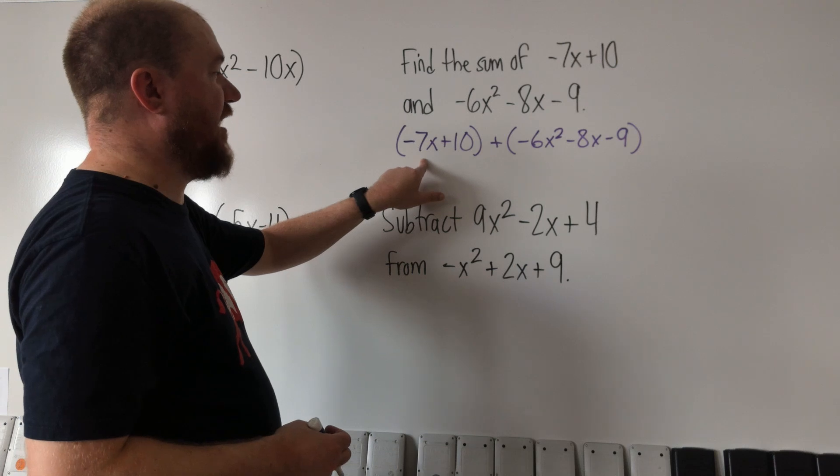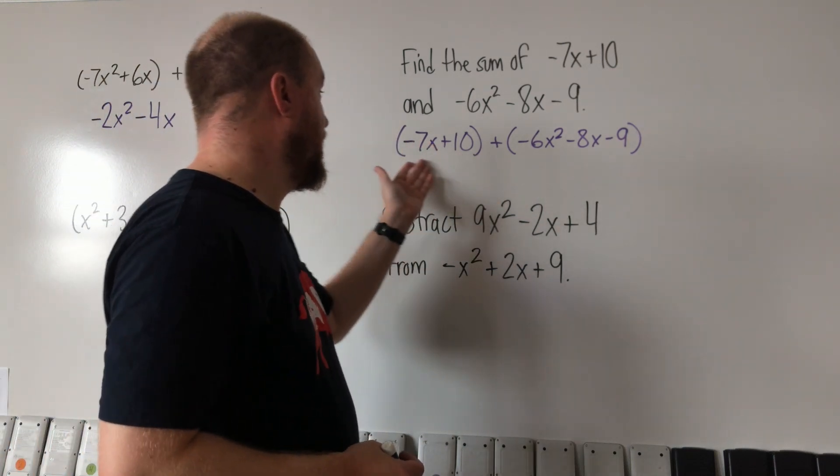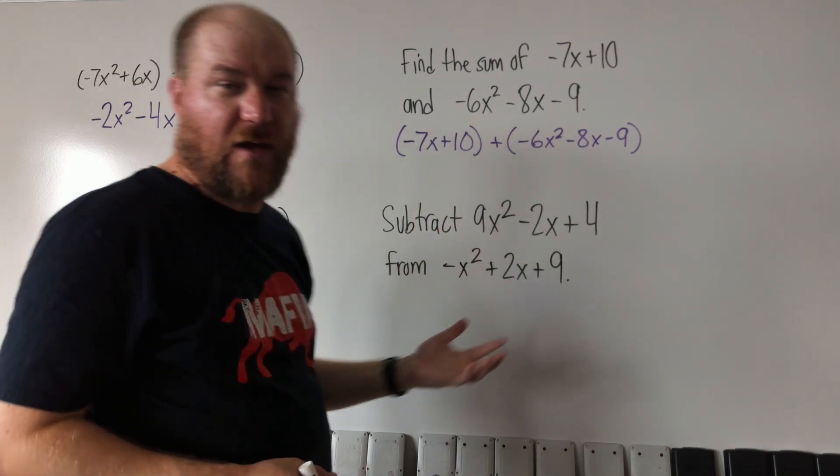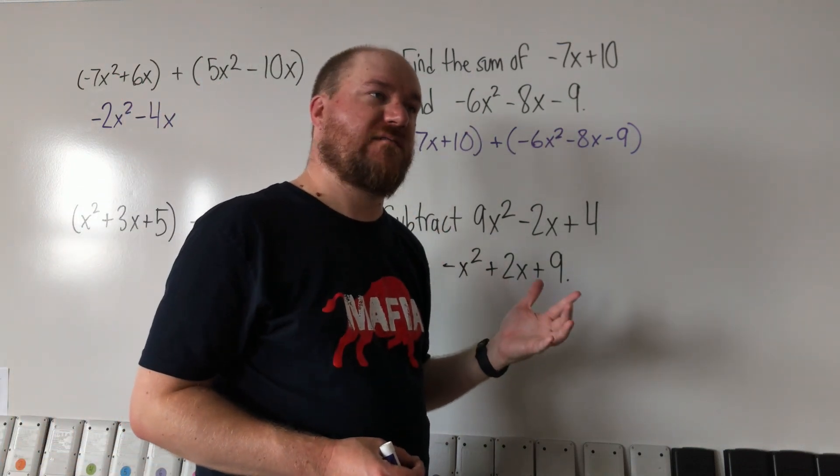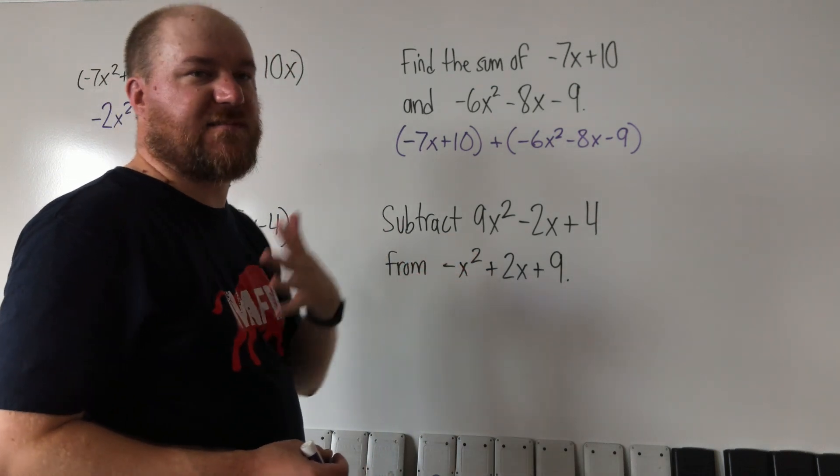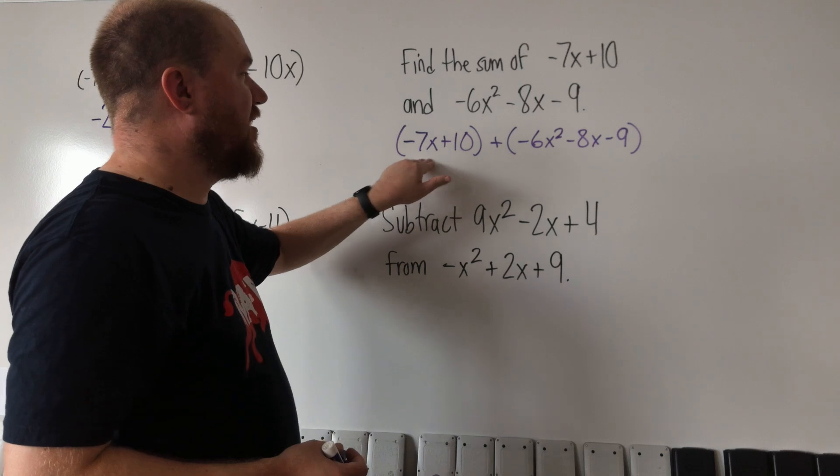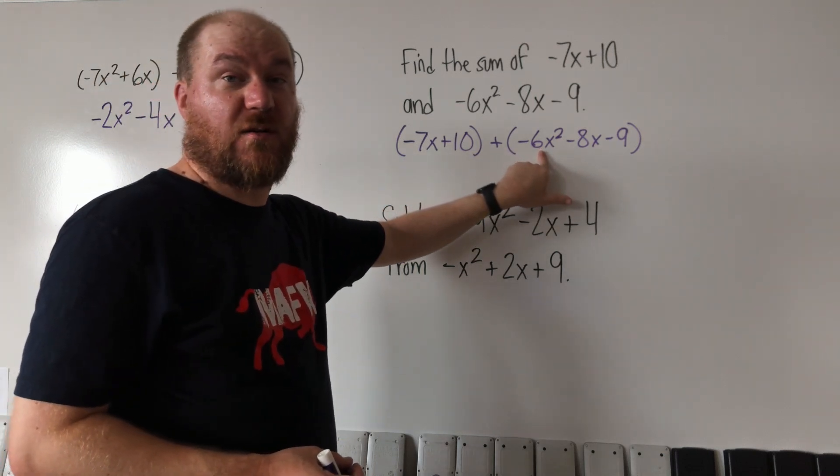So this negative 7x has one other x to go with. But usually when you do polynomials, it's preferred that you sort the exponents from highest to lowest. So I know this term is first, but I'm actually going to deal with this term first.